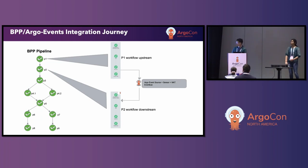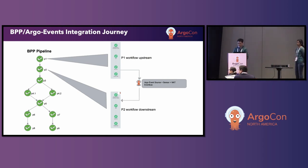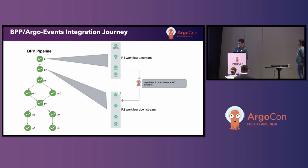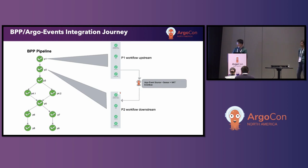So last year at ArgoCon, our colleagues actually presented how the Intuit batch processing platform utilizes Argo events to orchestrate the interdependencies among different pipelines. As an example, like in this diagram, we have a DAG of relationships among different pipelines. When the pipelines complete, they send events to Argo events, and Argo events will notify the downstream pipeline to begin execution. In today's talk, we will go over the challenges when we try to scale this platform up to more than 10,000 pipelines, and we will briefly describe our work in addressing those challenges.